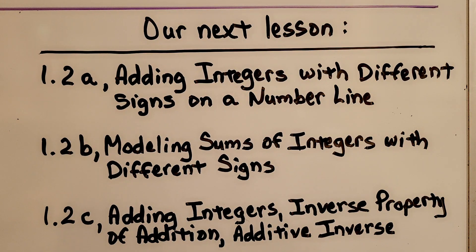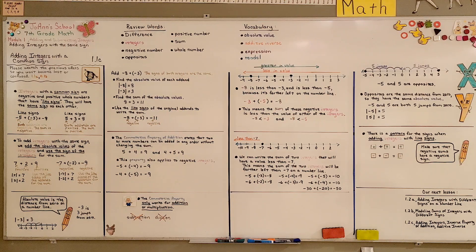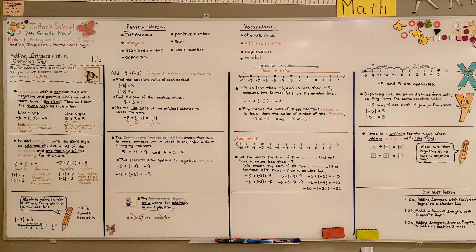Our next lesson is going to be 1.2a, where we'll learn about adding integers with different signs on a number line. Remember, as numbers on the number line move to the left they become less, and as they move to the right they become greater in value. I hope you have a wonderful day and are doing well, and I hope you'll join me for the next lesson. Bye!